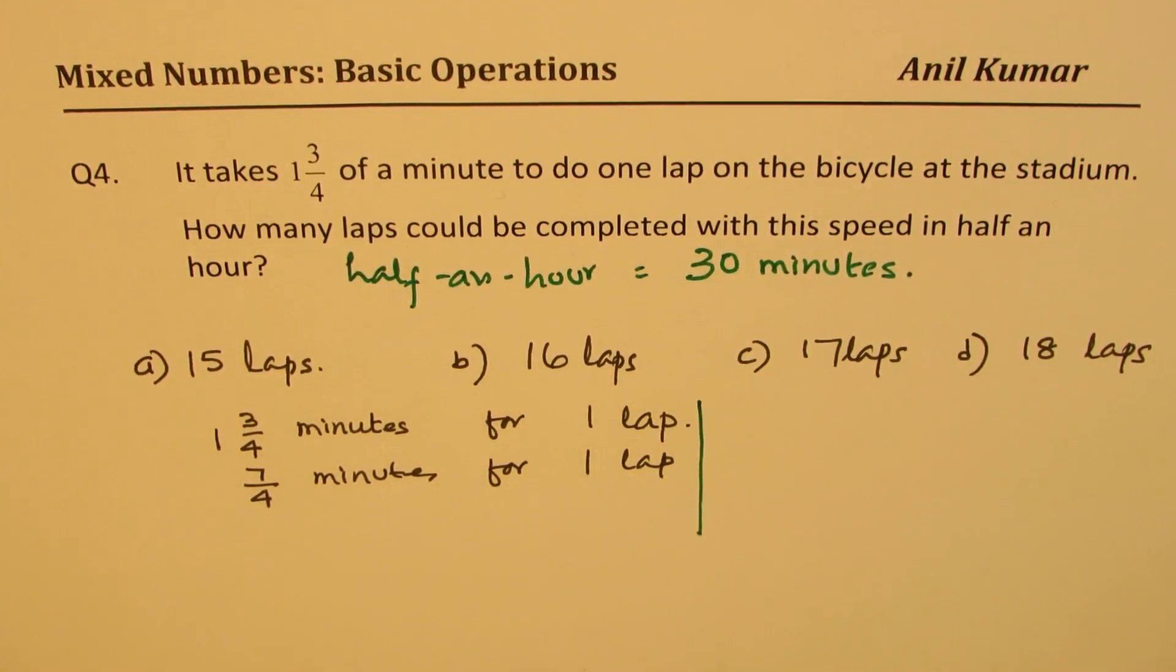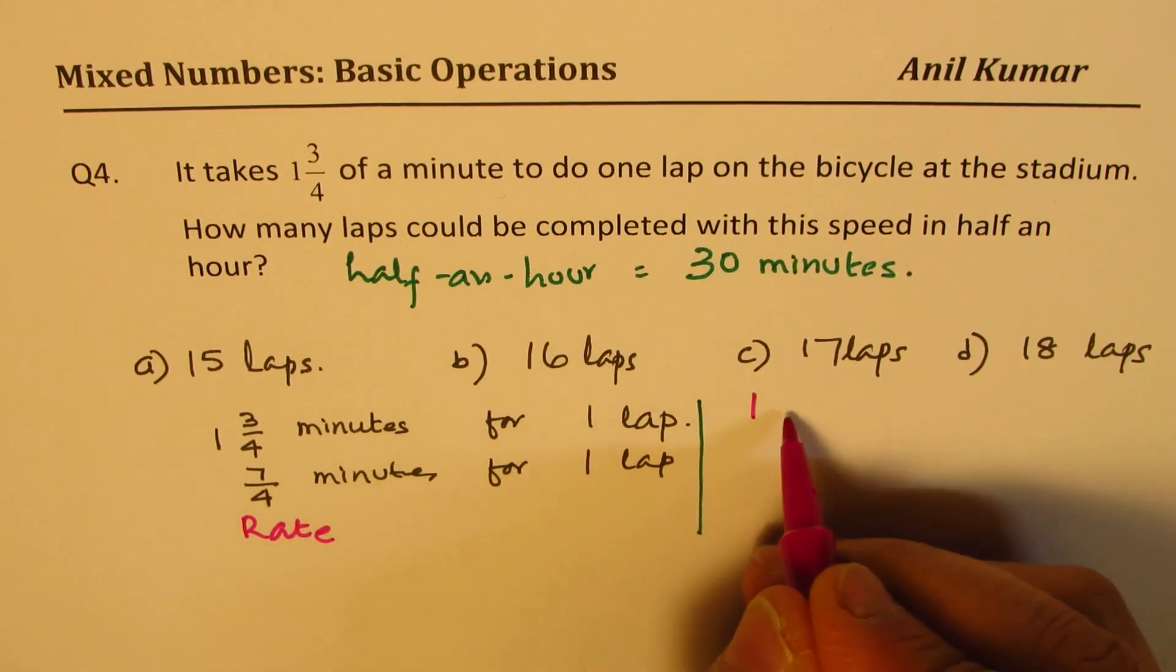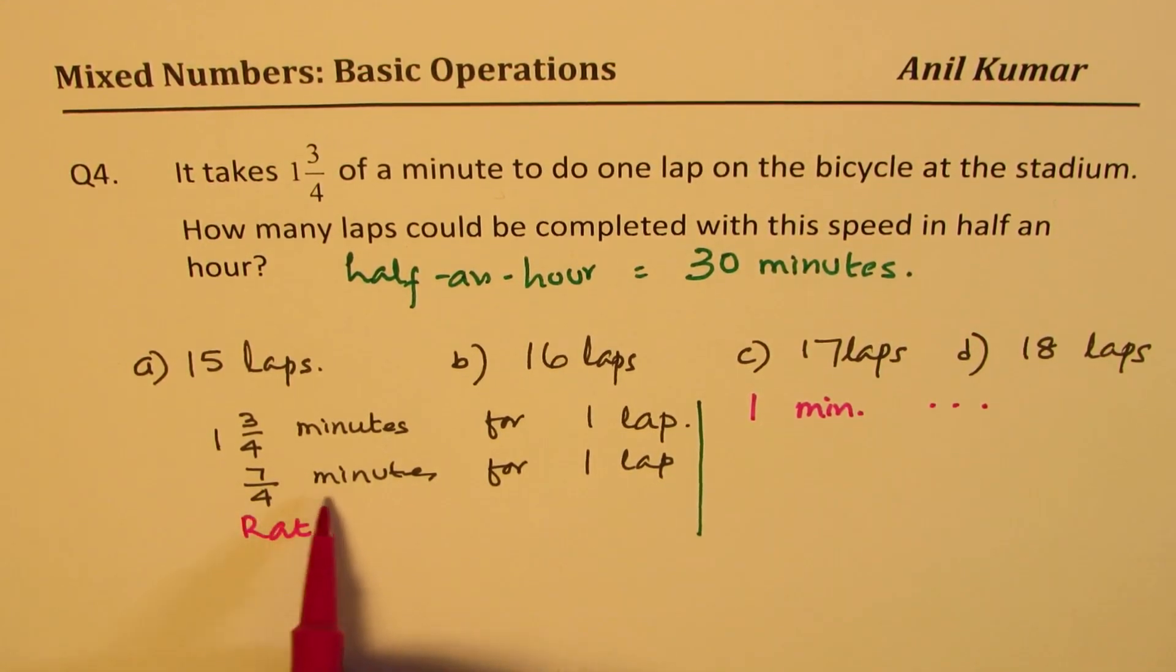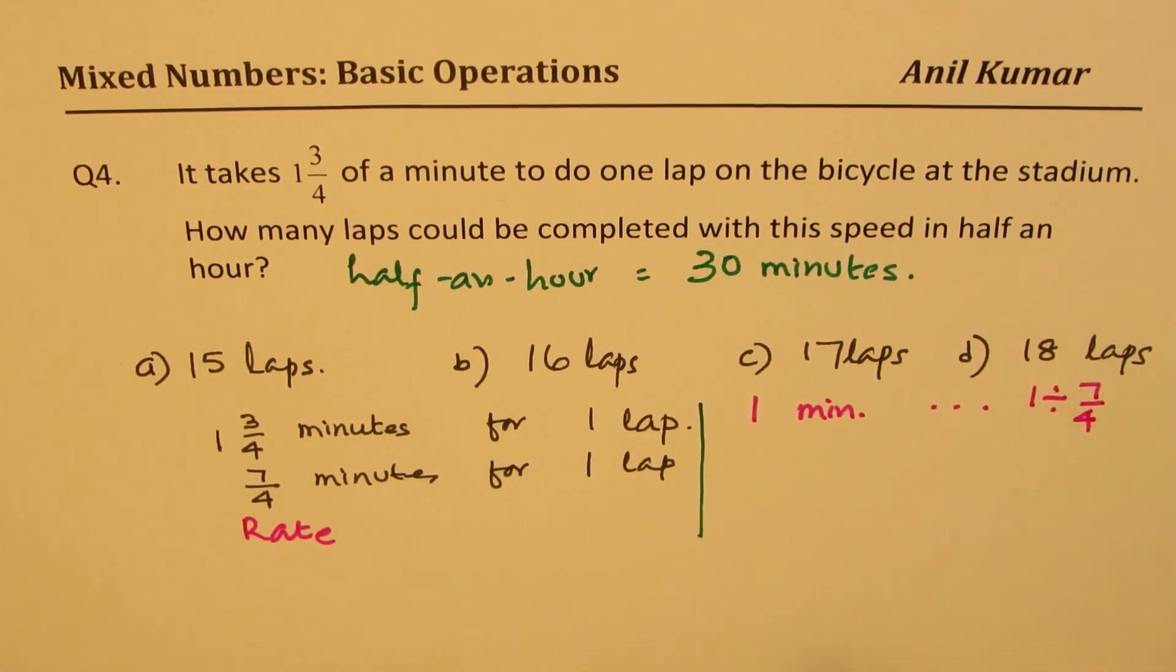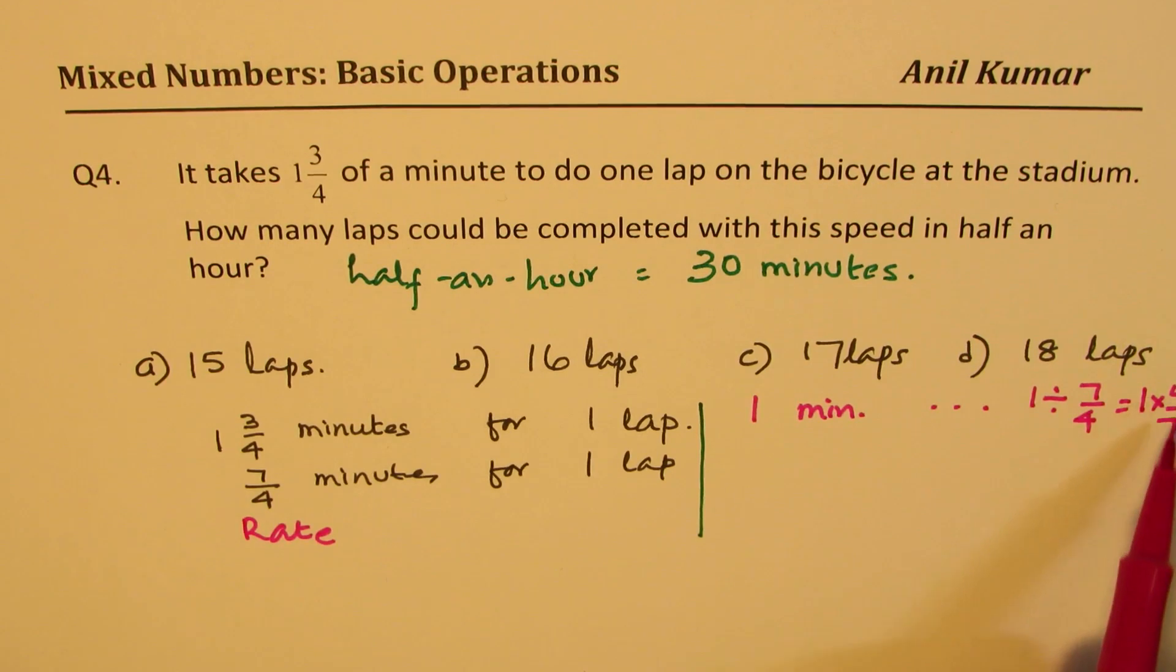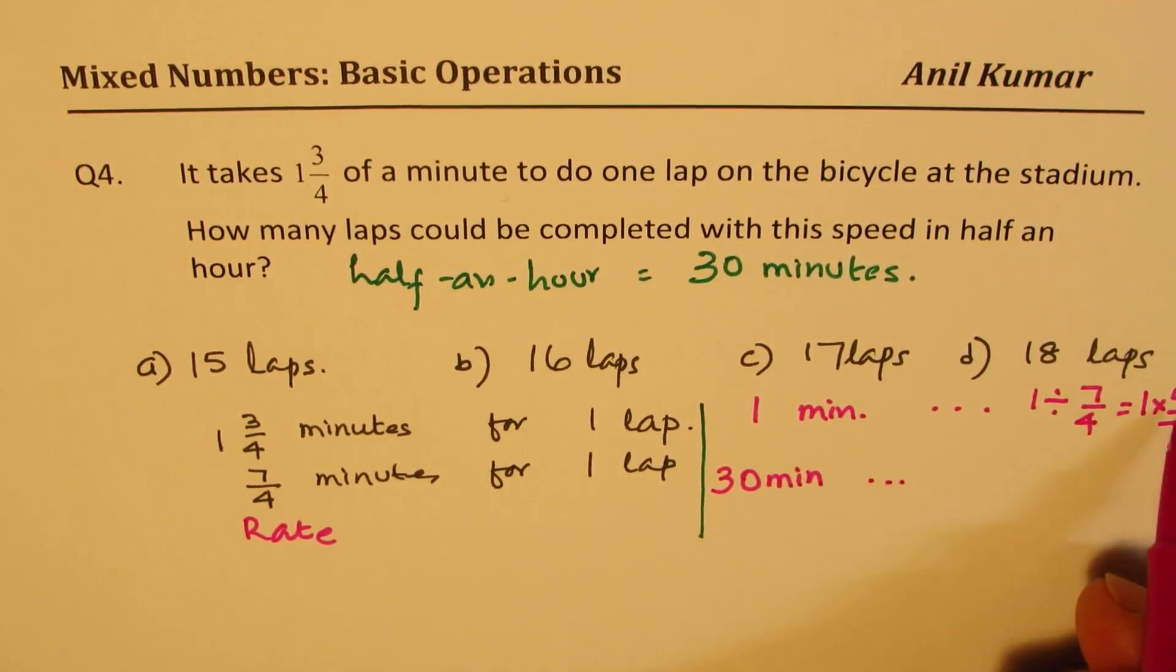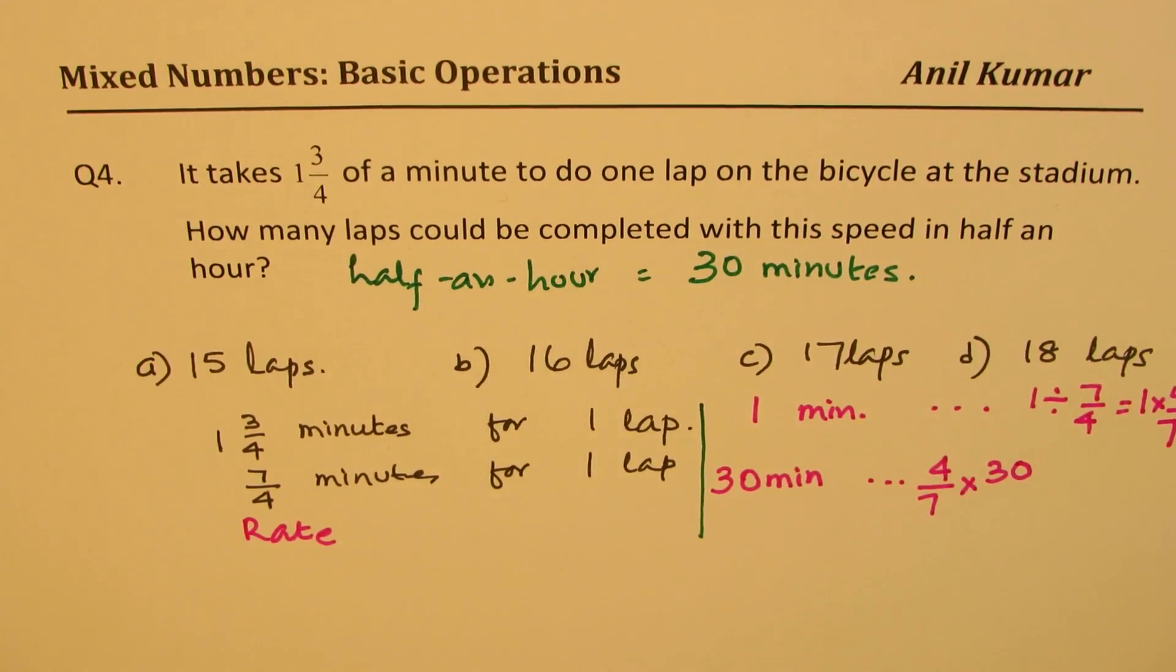Now it takes 1 3/4 minutes for 1 lap. Let me write this as 1 times 4 plus 3 is 7 over 4 minutes. So it is less than 2 minutes. You can estimate also. If it is less than 2 minutes, the answer is more than 30 divided by 2, which is 15. So we have something more than 15 as the right answer. Let's figure out what is the right answer. So 7/4 minutes for 1 lap. So we want to find how many laps in 30 minutes. So how should we do it? Well, the strategy is like this. You always find the rate. So from here you get the rate. Rate means in 1 minute, how much?